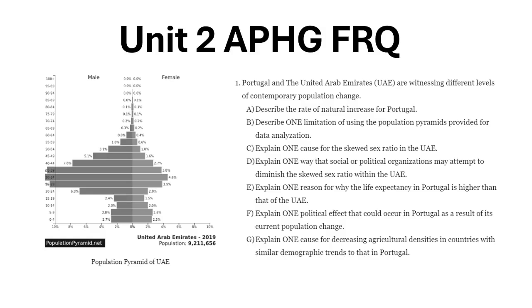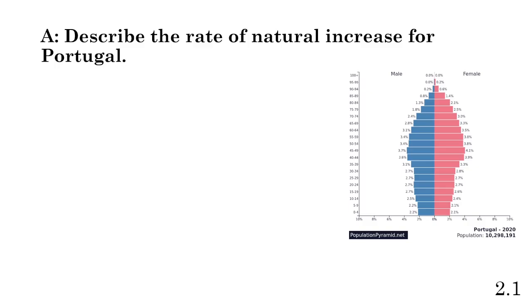Hey everyone, welcome back to another video. Today we're going to go through another FRQ for AP Human Geography — another Unit 2 FRQ on the UAE and Portugal. We're going to be looking at population pyramids and population composition. The population pyramids relate to different prompts, so we'll look at them when needed. We'll start with Portugal because it relates to the first question.